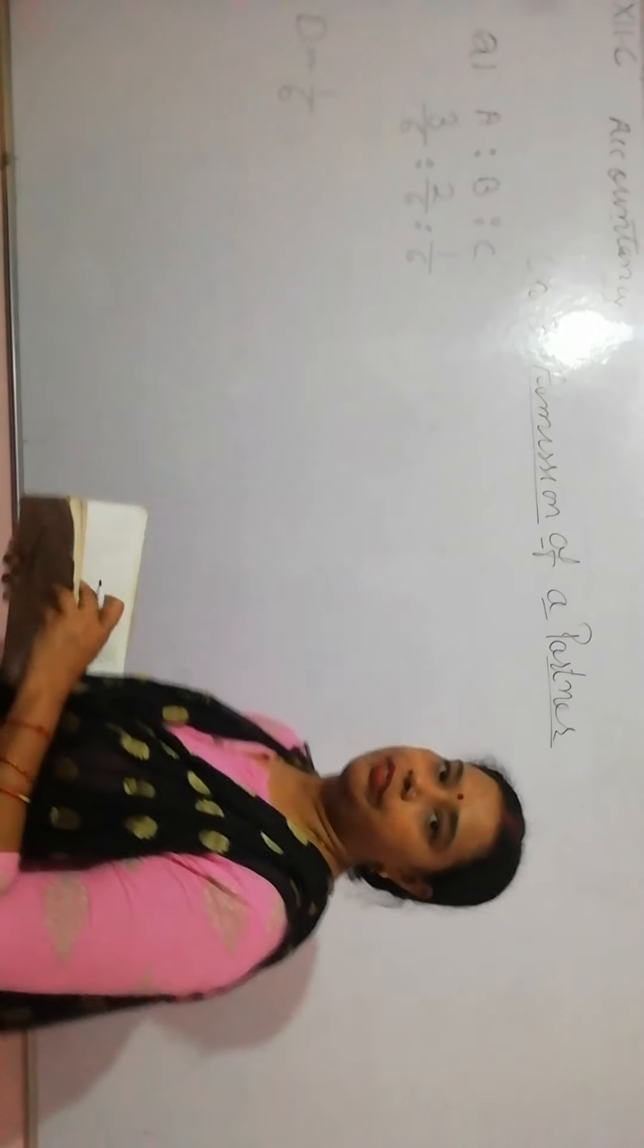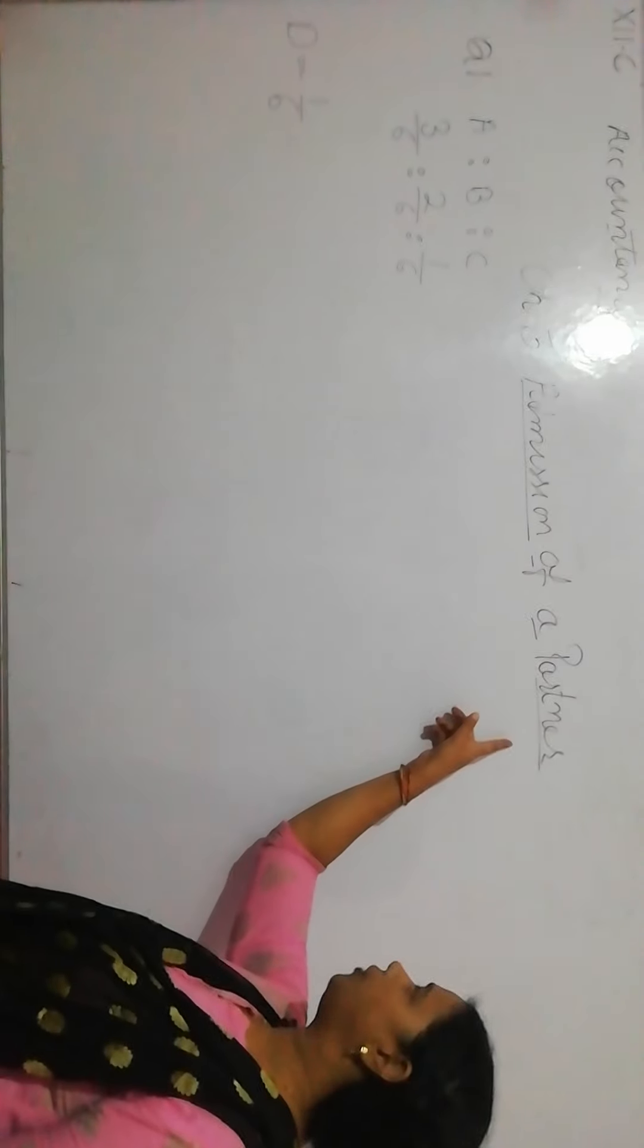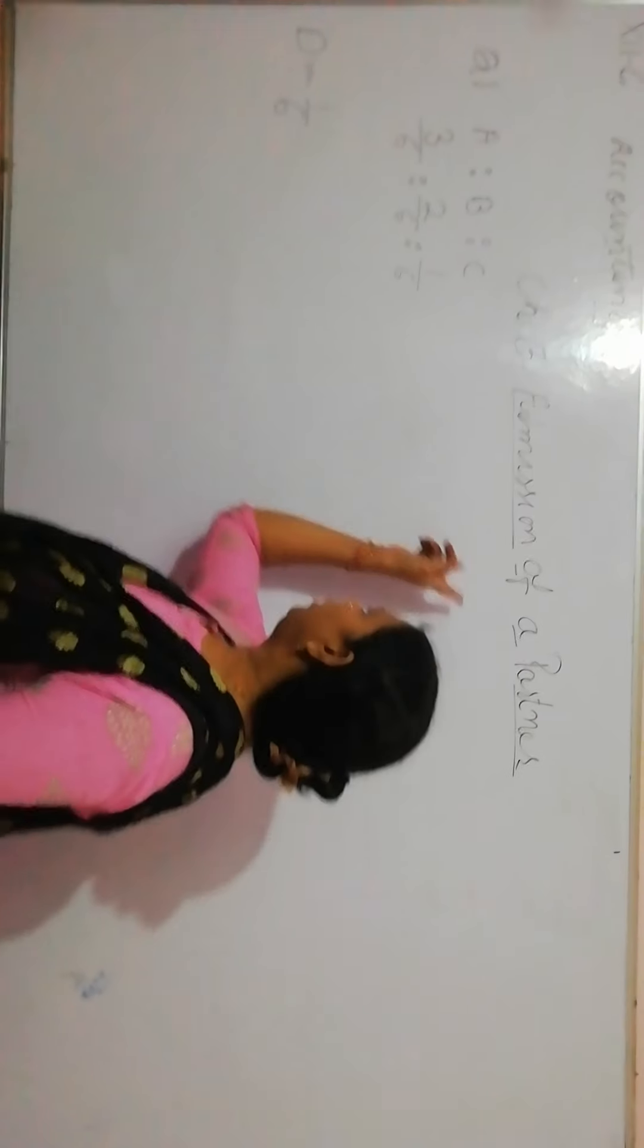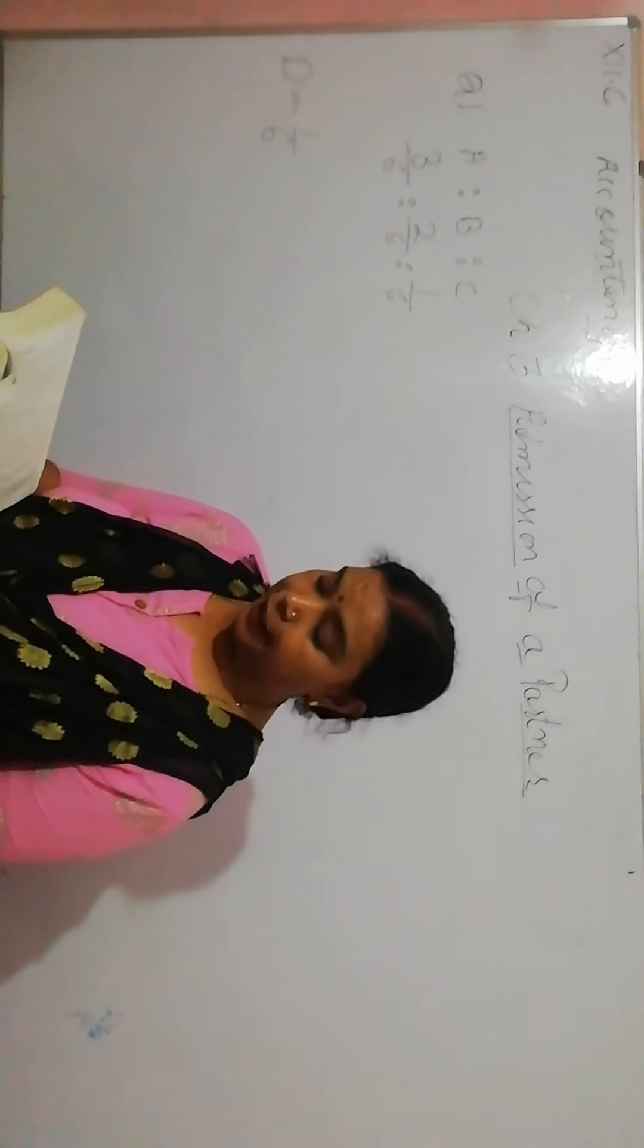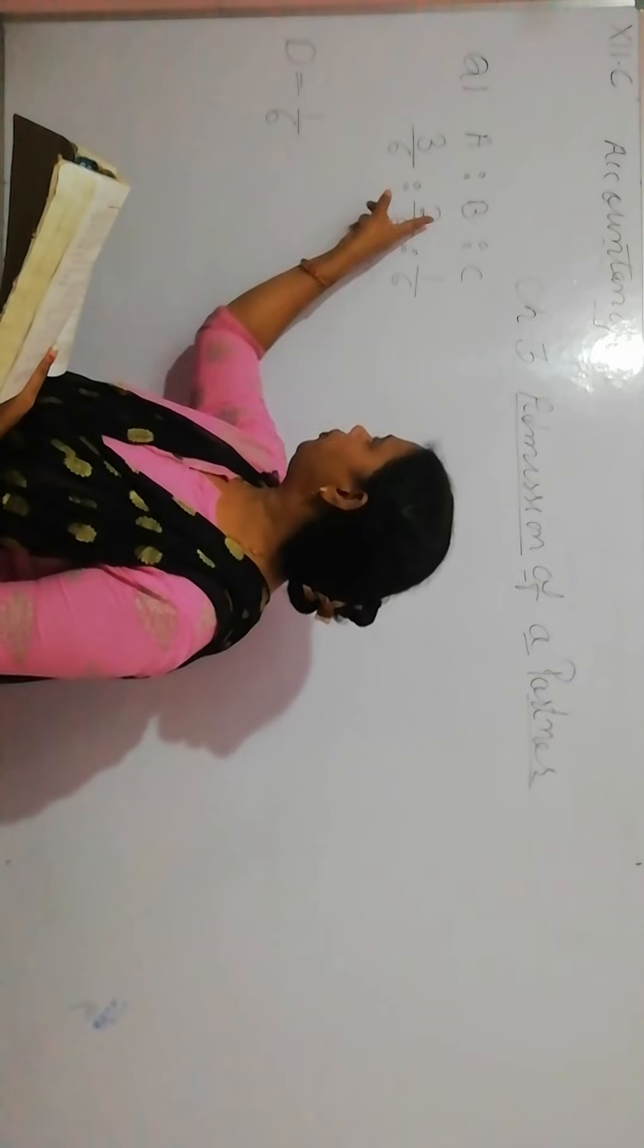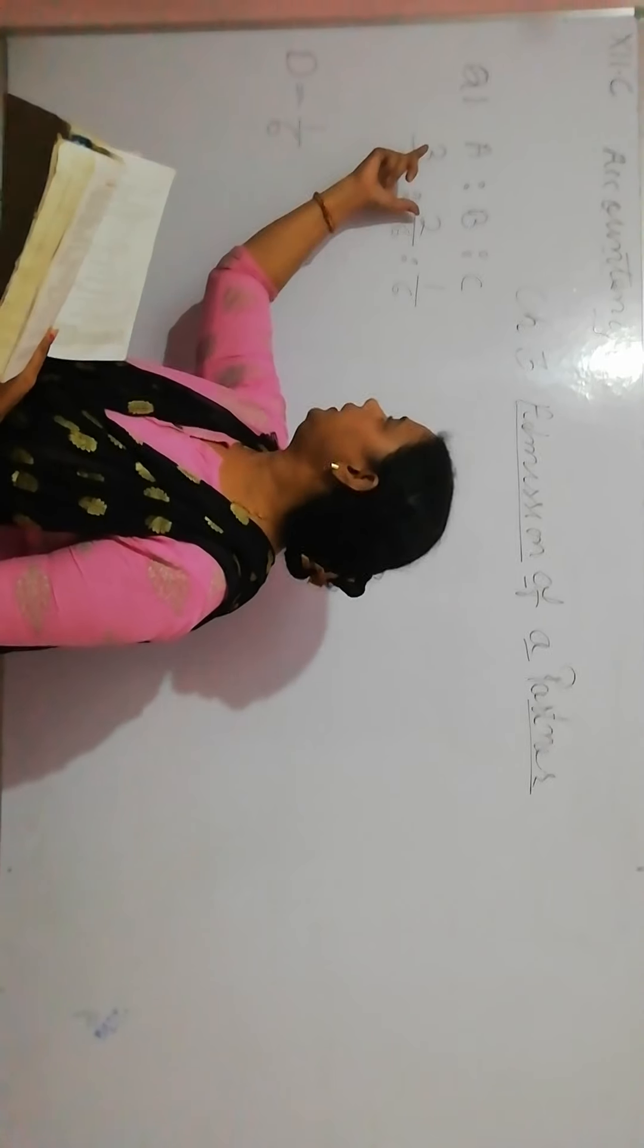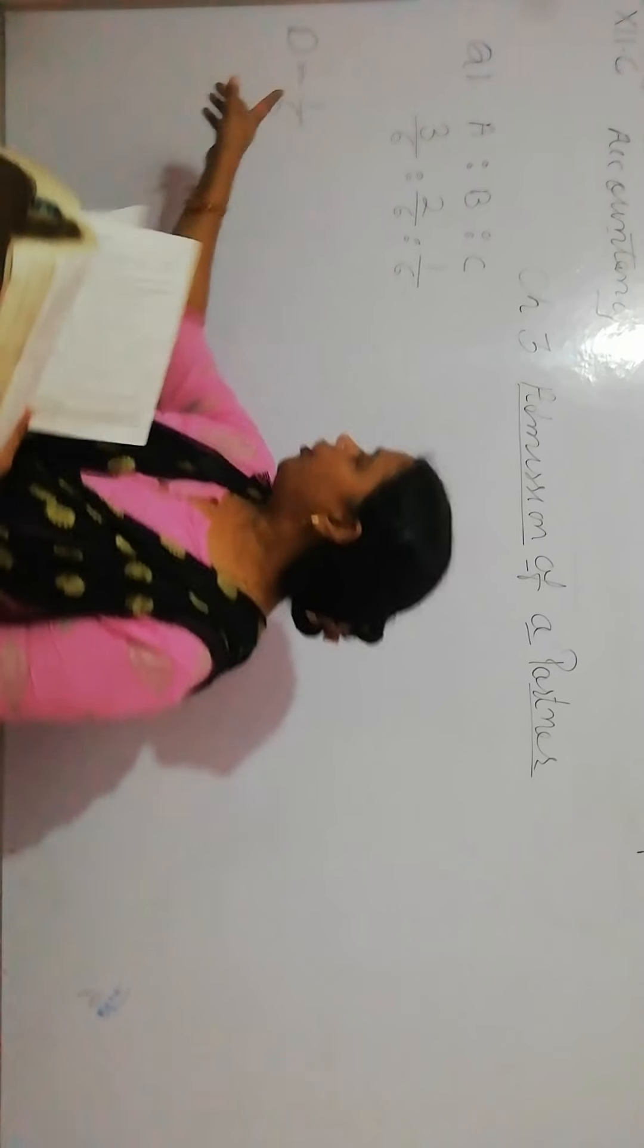Good afternoon class. Today we are going to start the new chapter that is the admission of a partner. In admission of a partner, the first question is there. The question is saying ABC are partners in proportion to 3 by 6, 2 by 6 and 1 by 6. These are the profit sharing ratios. Respectively, D was admitted.